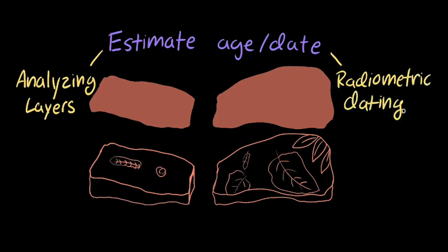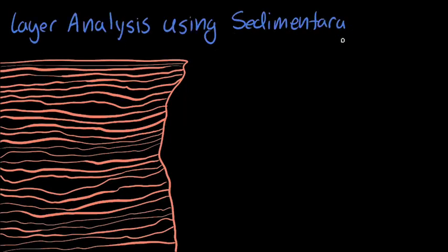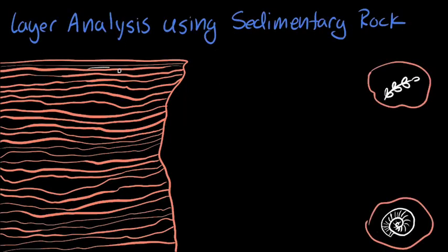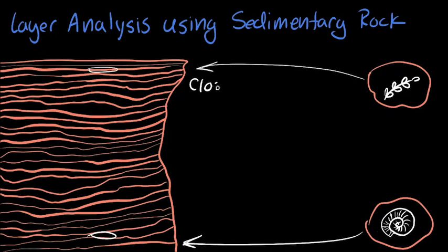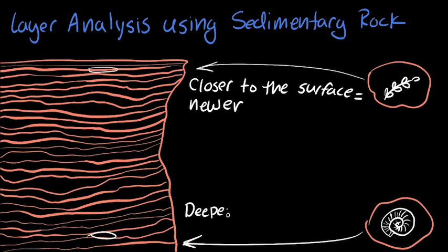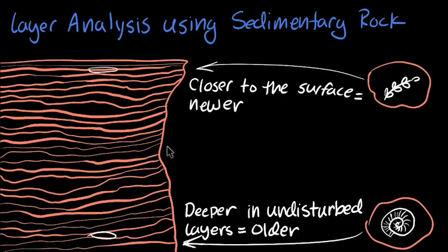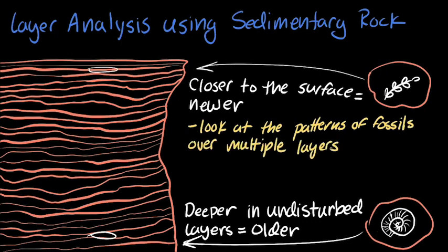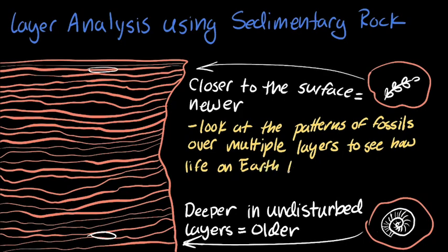Let's talk about layer analysis first. As you know, sedimentary rocks are formed in layers, with each new layer forming on top of an old layer. This means that the layers that are closer to the surface tend to be newer than the layers that are deeper in the ground. This means that a fossil found in a deeper layer of undisturbed sedimentary rock will be older than the ones found closer to the top. By looking through these layers, we're able to not only tell how old a particular fossil may be, but we can also look into the patterns of fossils over multiple layers to see how life on Earth has changed over time.